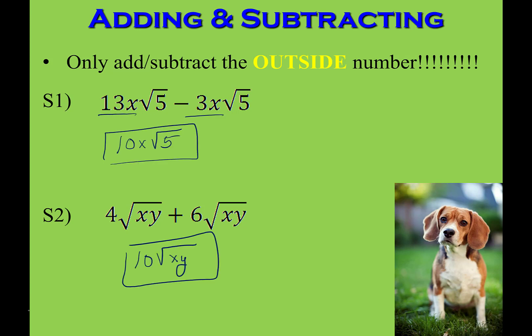For S1, you should have gotten 10x square root of 5. Because they both have square roots of 5, you can subtract them: 13x minus 3x gives 10x, and the square root of 5 doesn't change. For S2, both square roots have the same radicand x times y, so you add the 6 and 4 to get 10, giving you 10 times the square root of xy.